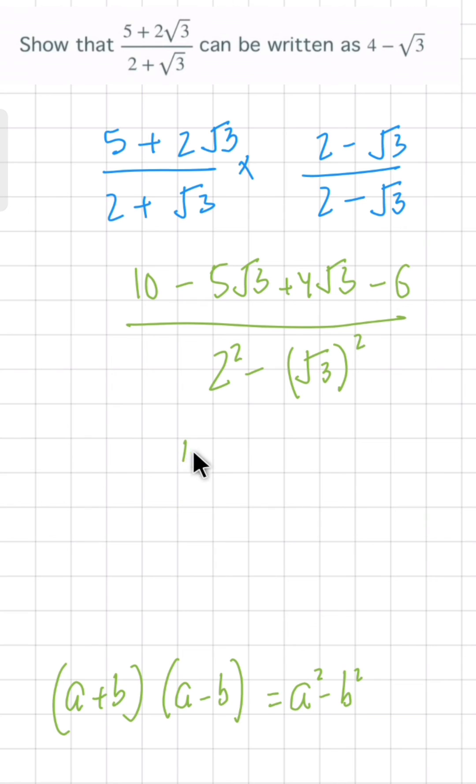Let's simplify the numerator: 10 - 6 becomes 4, and -5√3 + 4√3 becomes -√3. In the denominator we have 2² which is 4, and (√3)² is 3. So finally we have (4 - √3)/1.